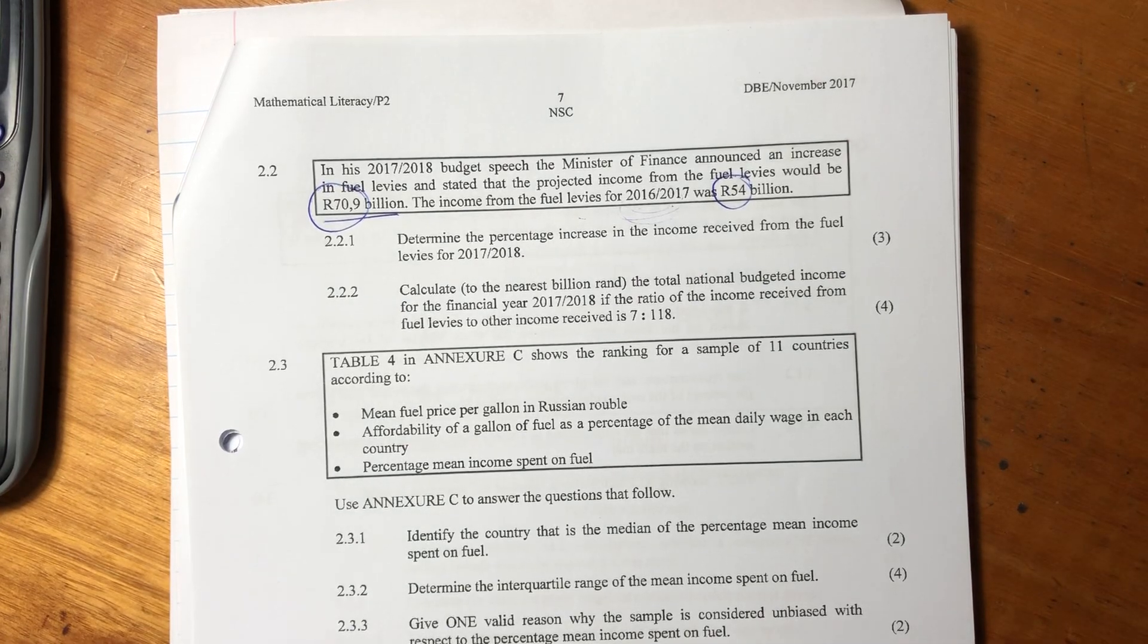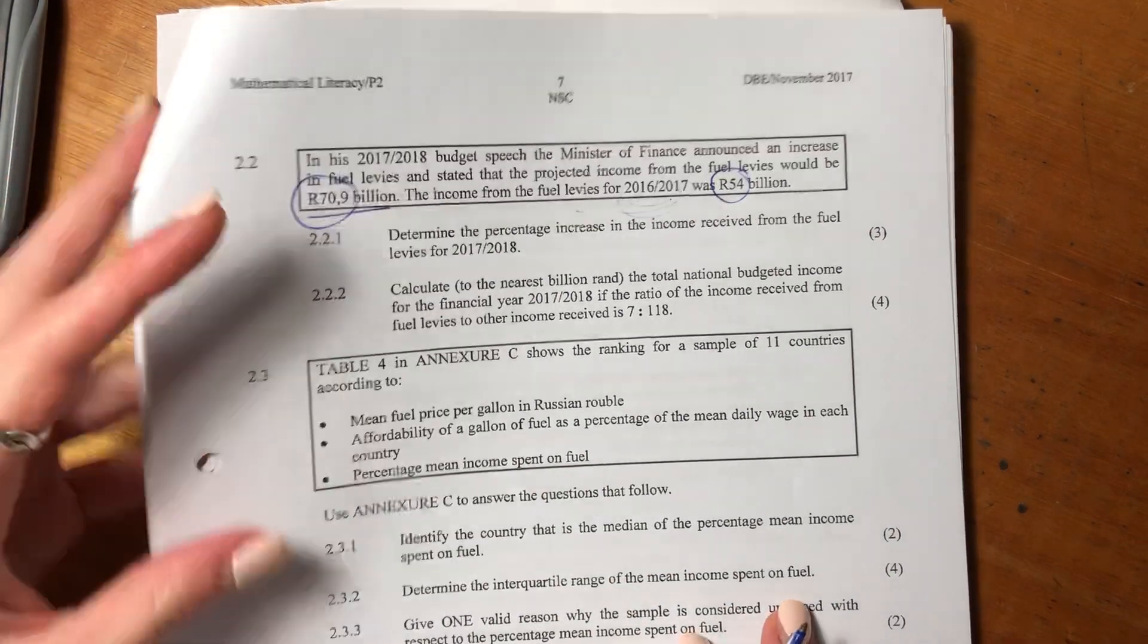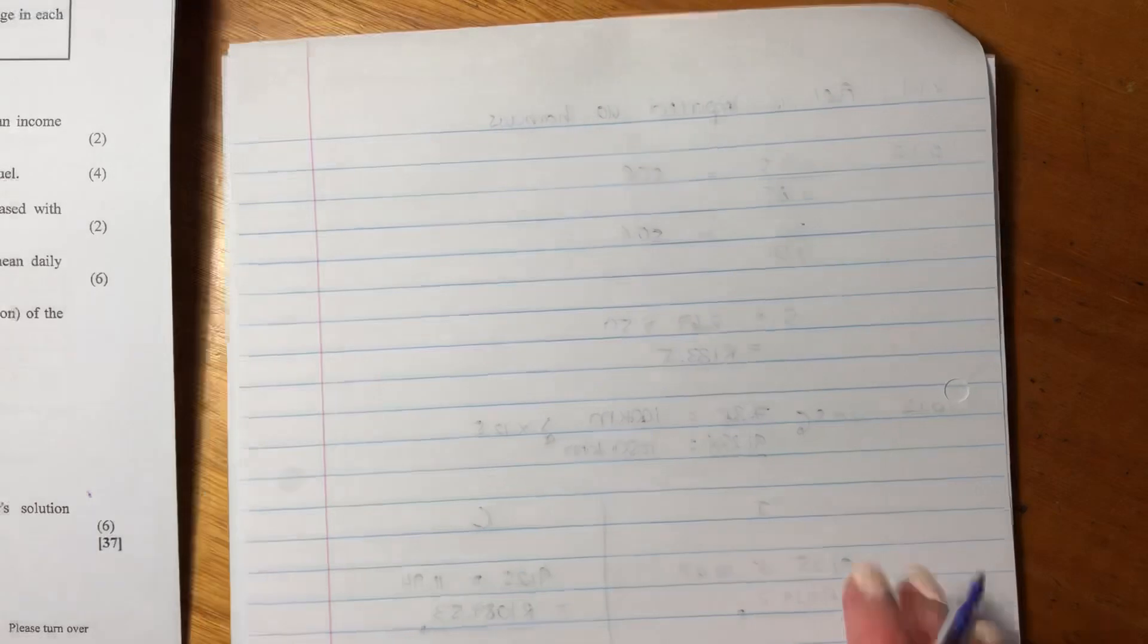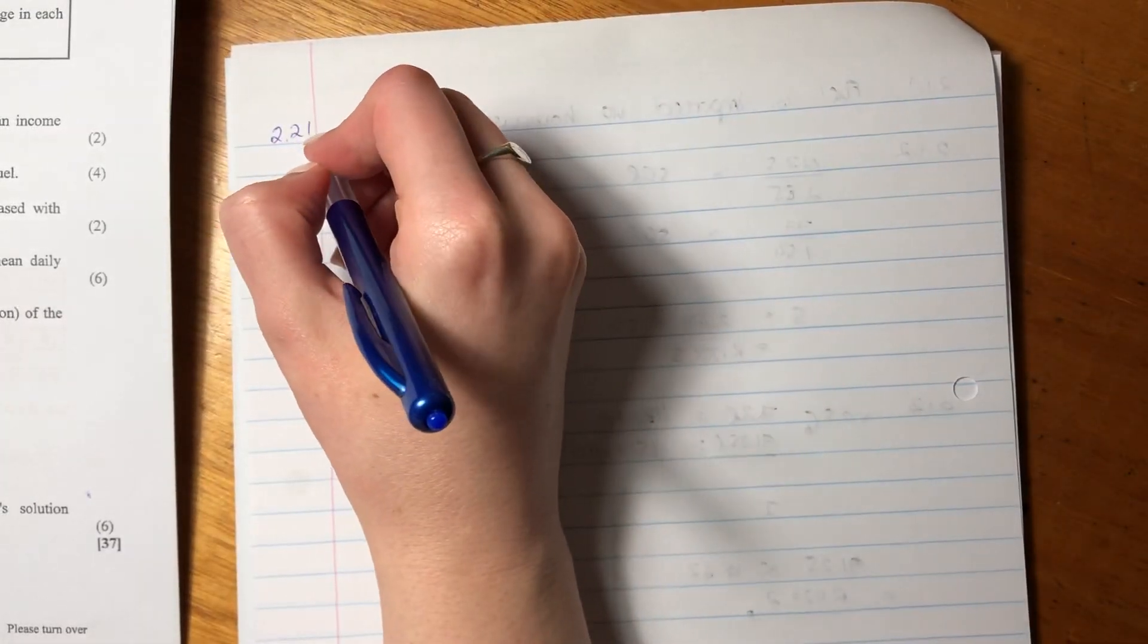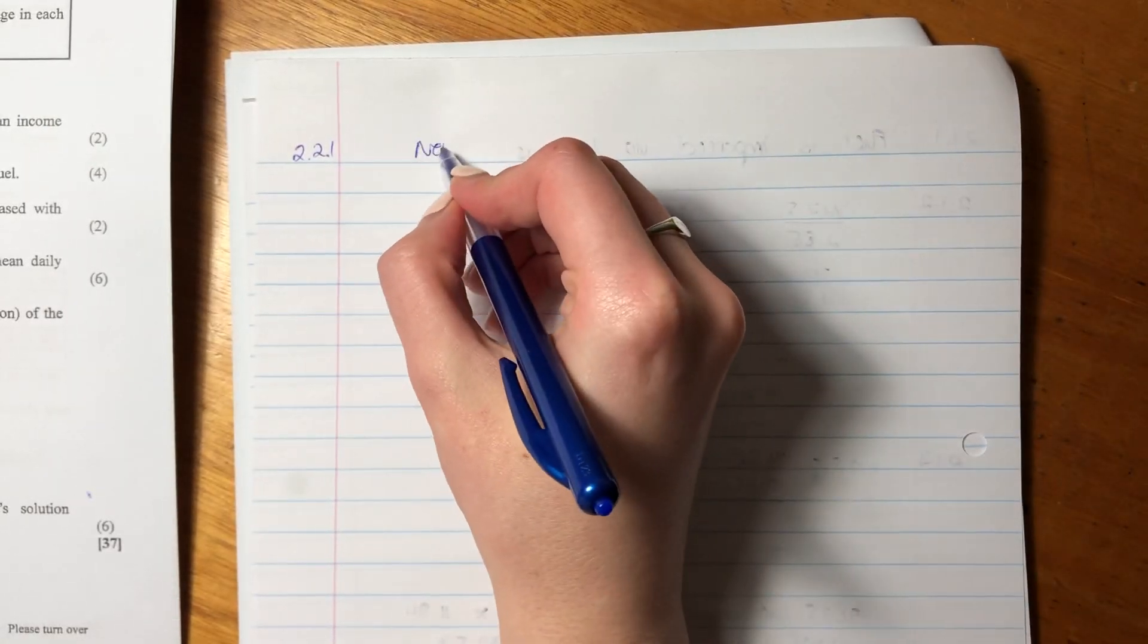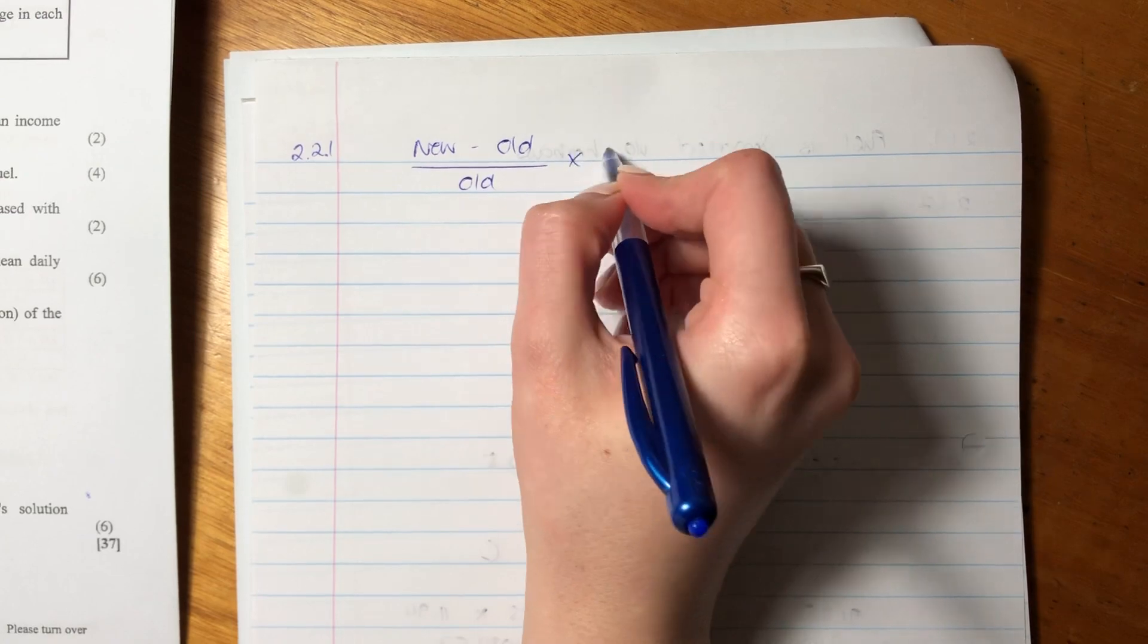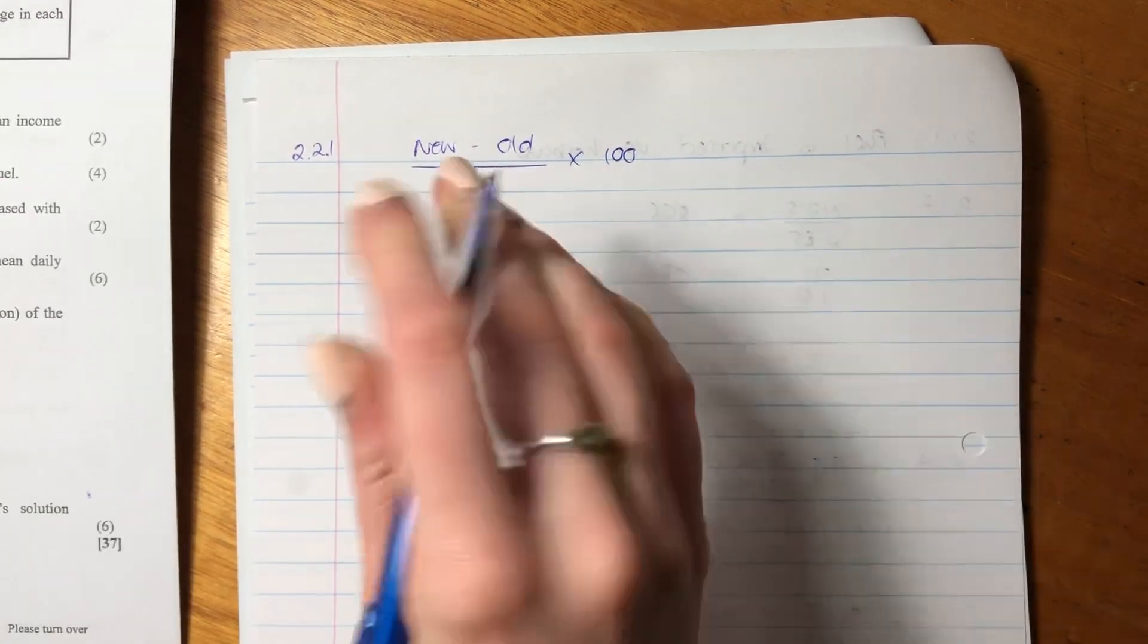The first question says, determine the percentage increase in the income received from the fuel levies for 2017-2018. So, let's just quickly write down our number. There's a formula here that we use, which you should know. You say new minus old, over old, times 100.